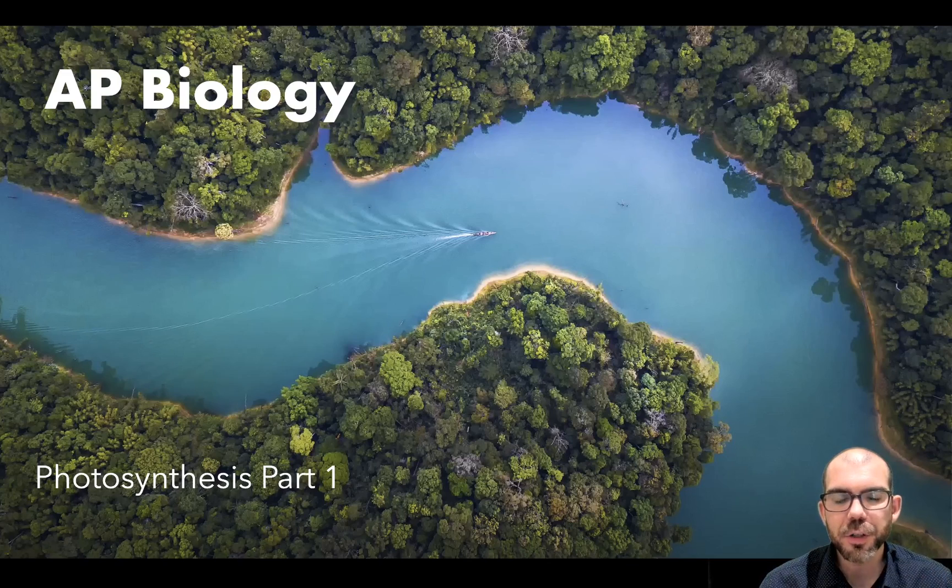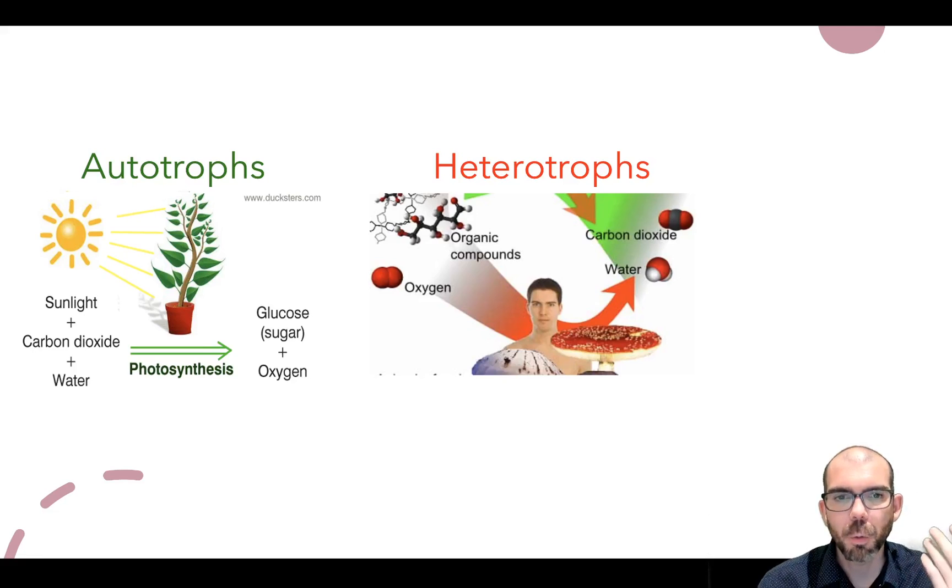This video is part one of a two-part introduction to photosynthesis for AP Biology. When we're looking at the question of metabolism or how living things obtain or use energy, there are two primary ways living things accomplish this goal.